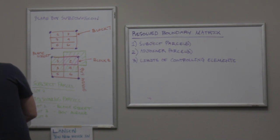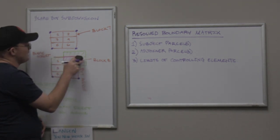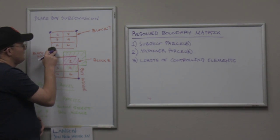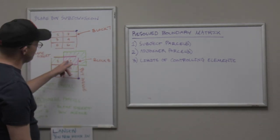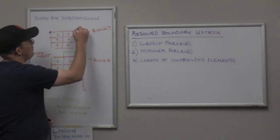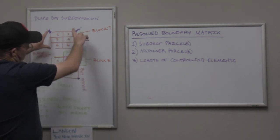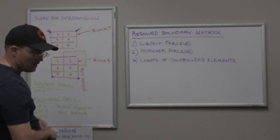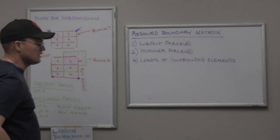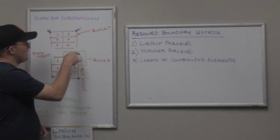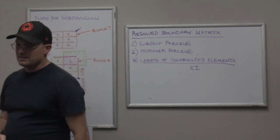Assume these interior lot corners didn't get set. Now say the city comes in and puts new pavement and sidewalks on Blake Street and blows out these four monuments — they don't do monument preservation. Think about how that changes our limits of controlling elements. It doesn't change layer one or two — the subject parcel and adjoining parcels are the same. But now we've got to come all the way up to the north corners of Block 7 to find the original corners and successfully prorate the lots. If you remember what you've learned about simultaneously created parcels, you have to go to the next controlling monument. We basically doubled the footprint of our limits of controlling elements.